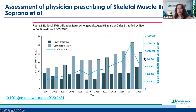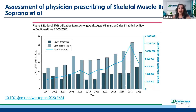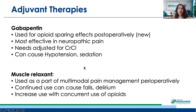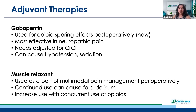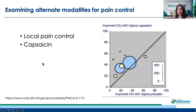Skeletal muscle relaxants: the number of new prescriptions and refills is going up significantly in older adults. Muscle relaxants can cause increased falls and delirium, and these problems increase with the concurrent use of opioids.